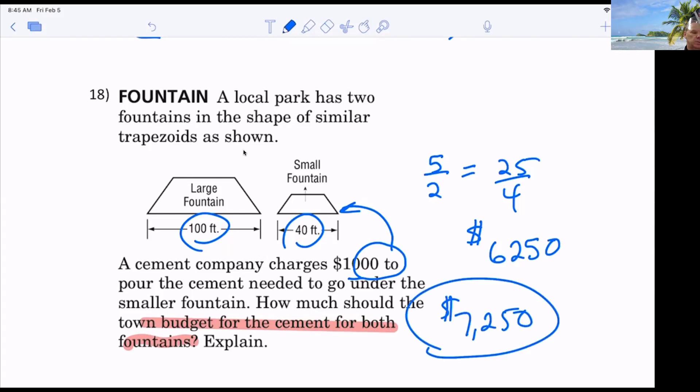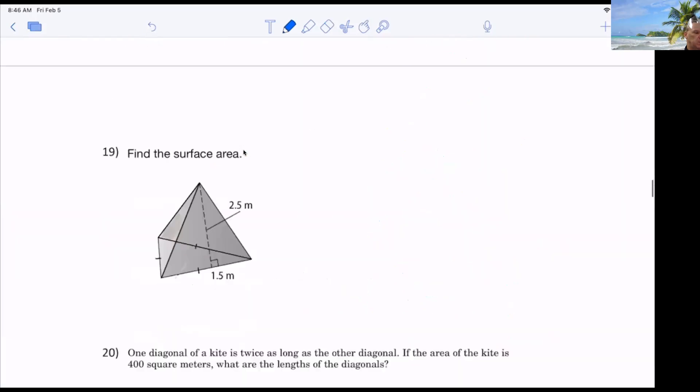Yes. Well, because you just take 1,000 and multiply it by 25 fourths. Right? Because it's 25 fourths times greater, which is what? 6.25 times greater. All righty. Here we go. 19. Surface area. Okay. For some reason, people have trouble with this.